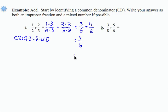If I want to write this as an improper fraction, that's 7 sixths. As a mixed number, it's 1 and 1 sixth.